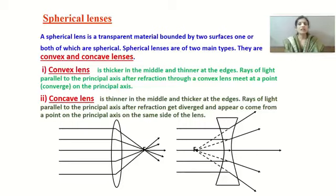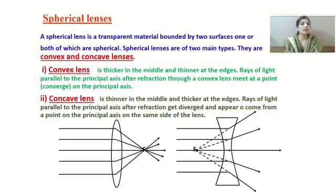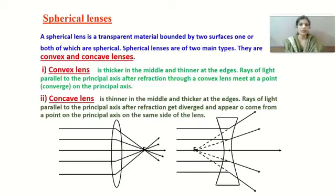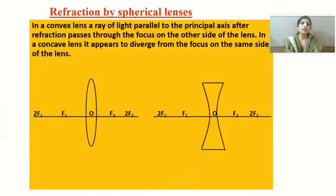If rays of light fall from the other side — from right to left — the focus will be on the other side of the lens. This means every lens has two foci, two radii of curvature, and two centers of curvature. Just as we studied rules for drawing ray diagrams for spherical mirrors, we must follow certain rules for spherical lenses too.